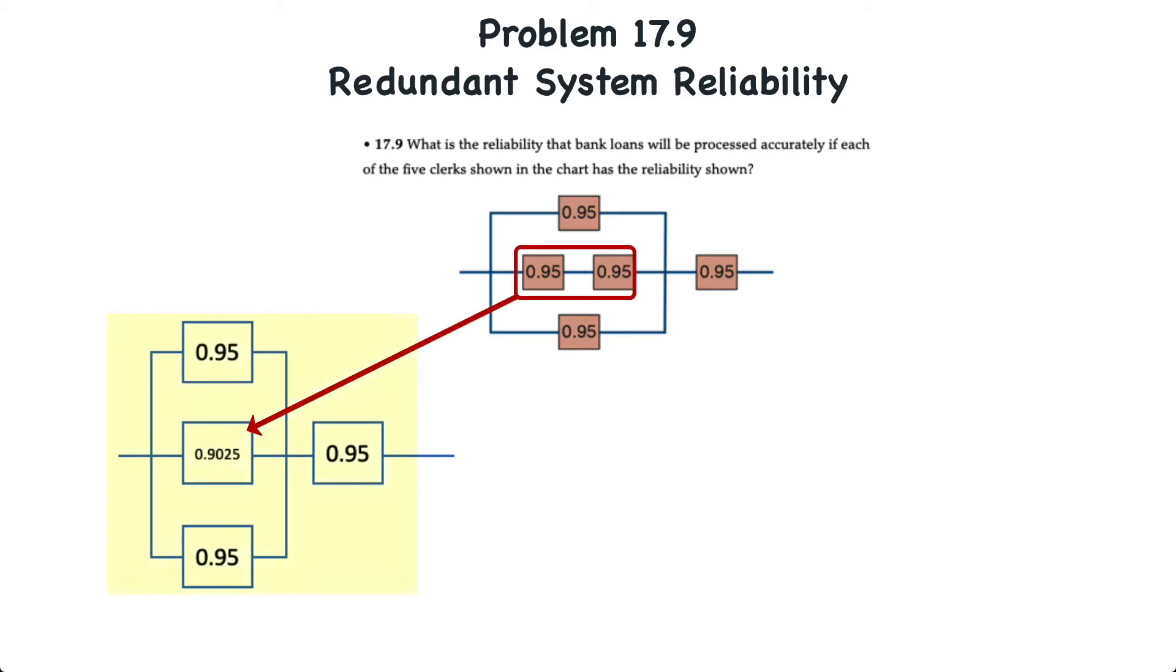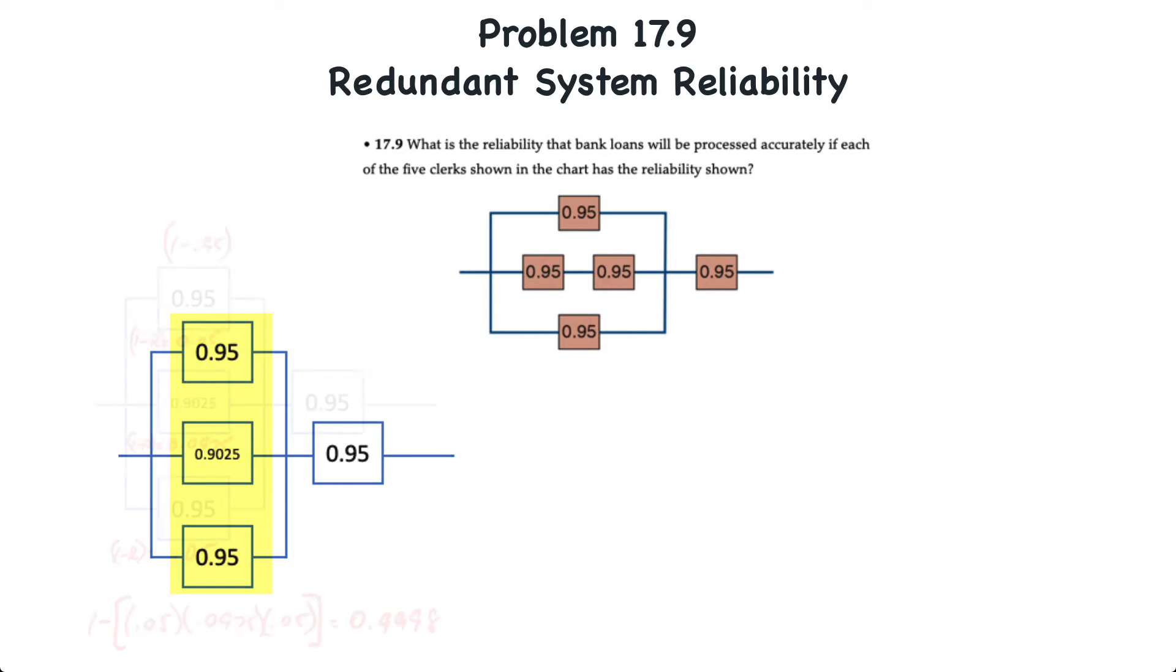Now, we have a system that looks like we have three components or clerks in parallel rather than in series. So, what we have to do is compress or combine all of those into one overall reliability calculation. And to do that, we basically can determine what the unreliable portion of each redundant subsystem.